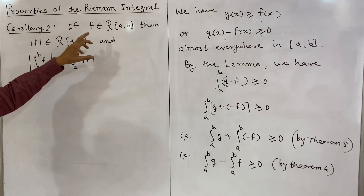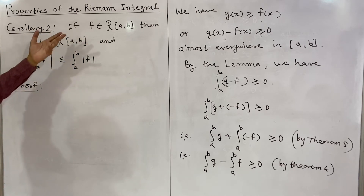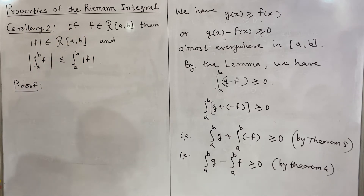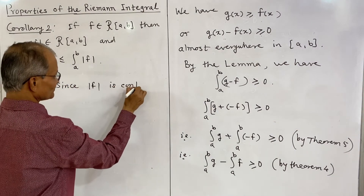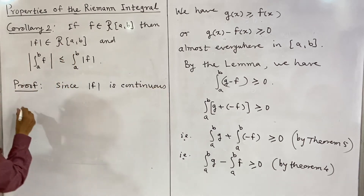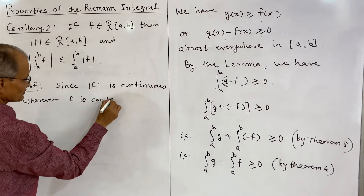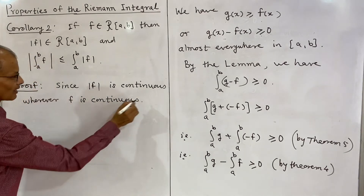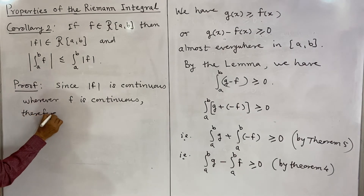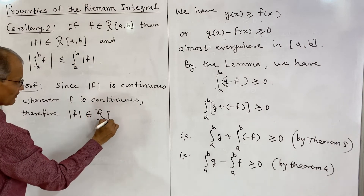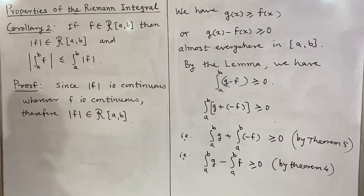The first part is simple. Absolute value of f is continuous wherever f is continuous, and therefore if f is Riemann integrable, |f| is also Riemann integrable. Since |f| is continuous wherever f is continuous, f being Riemann integrable implies |f| is Riemann integrable.